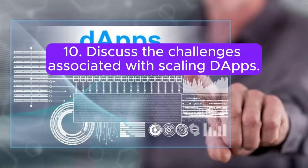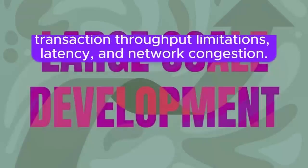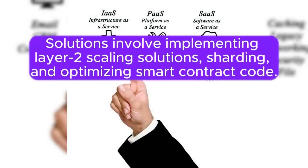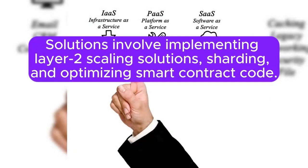10. Discuss the challenges associated with scaling DApps. Answer: Scaling challenges include transaction throughput limitations, latency, and network congestion. Solutions involve implementing layer-2 scaling solutions, sharding, and optimizing smart contract code.